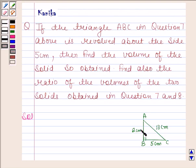In this question, this triangle ABC is revolved about the side BC. We know that the solid generated by the rotation of a right angle triangle about one of the sides containing the right angle is called a right circular cone.